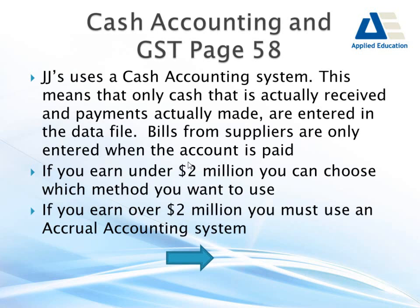Looking at cash accounting and GST on page 58 - JJ's uses a cash accounting system. That means only cash we've actually received and payments we've actually made are entered into the data file in MYOB. For example, if I've bought some fish from Calis's and I get a bill for $500, it sits there and I won't enter it into MYOB until I've actually paid it. That's the difference between cash accounting and accrual.